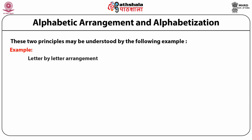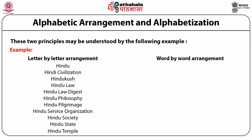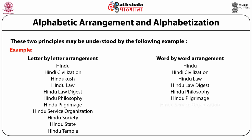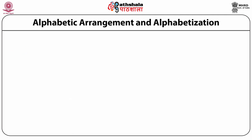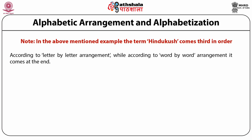These two principles may be understood by example. Under letter-by-letter arrangement: Hindu, Hindu civilization, Hindu Kush, Hindu law, Hindu law digest, Hindu philosophy, Hindu pilgrimage, Hindu service organization, Hindu society, Hindu state, Hindu temple. In the above example, the term Hindu Kush comes third in order according to letter-by-letter arrangement, while according to word-by-word arrangement it comes at the end.